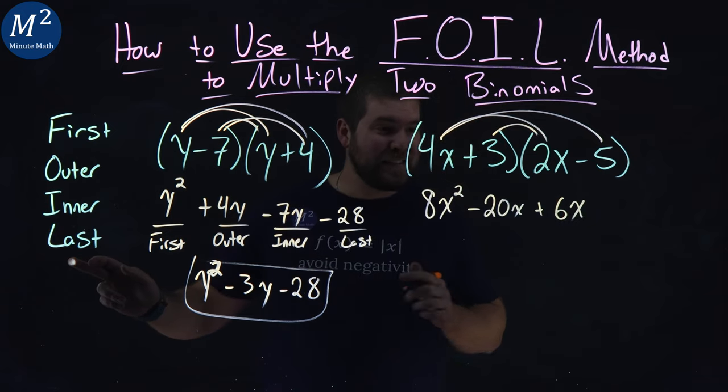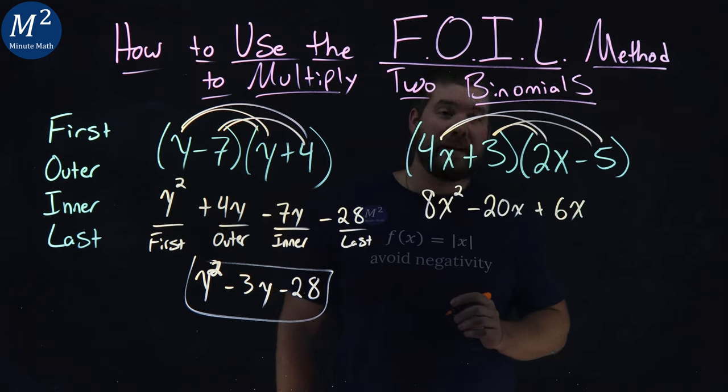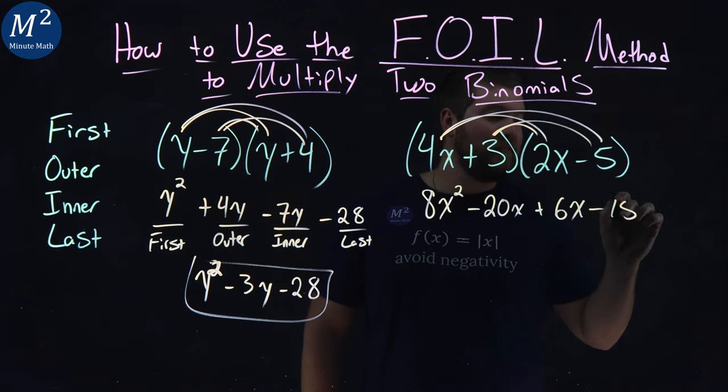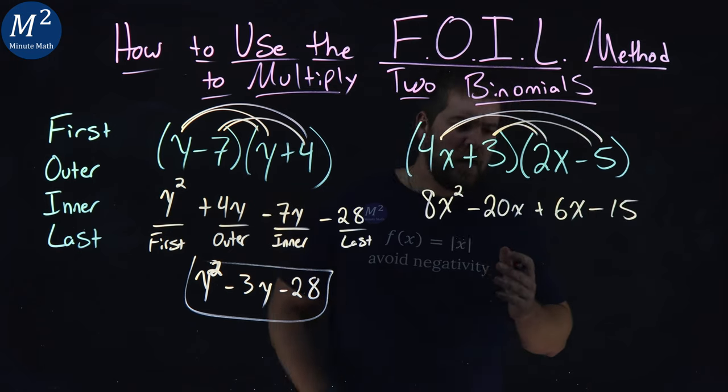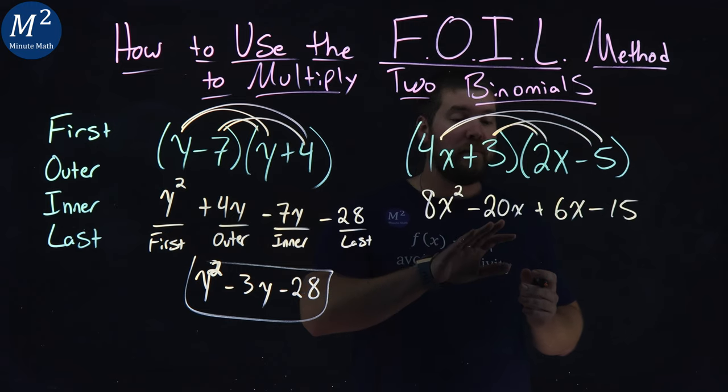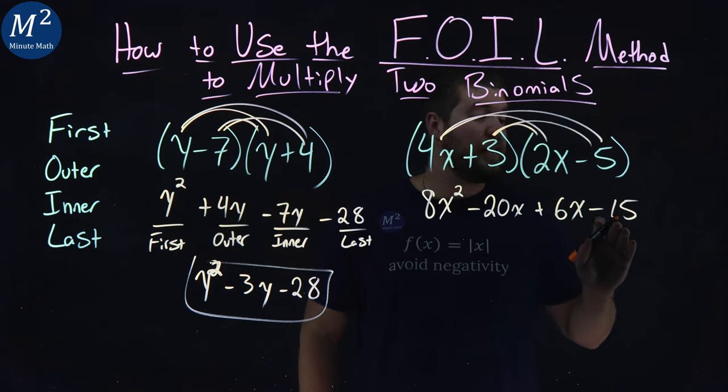Lastly, the last ones again. 3 times minus 5 is minus 15. So now from here, we have 8x squared minus 20x plus 6x minus 15. We've got to combine our like terms.